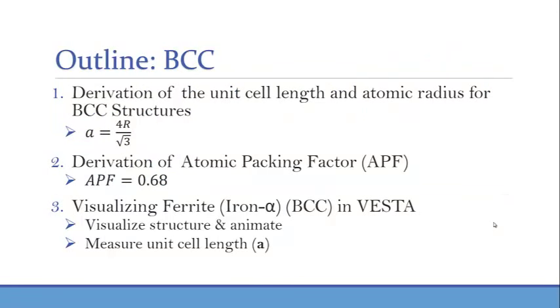Here's an outline. First, we will derive the relationship between the unit cell length and the atomic radius for BCC structures. Second, we will derive the atomic packing factor for body-centered cubic structures. And then we will visualize ferrite, which is a common allotrope of iron, the alpha phase of iron, in VESTA, and we'll see that it is actually a BCC-packed structure.